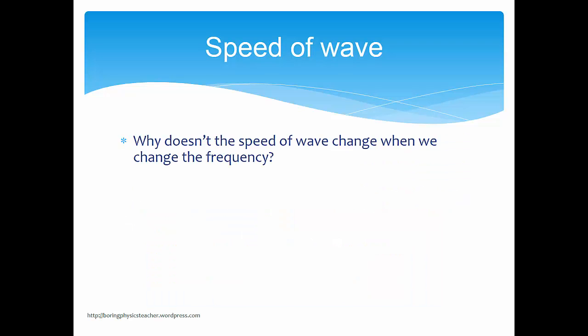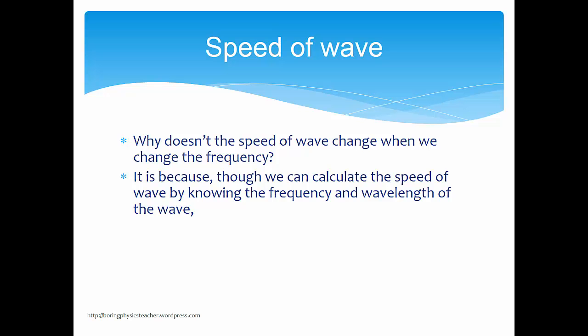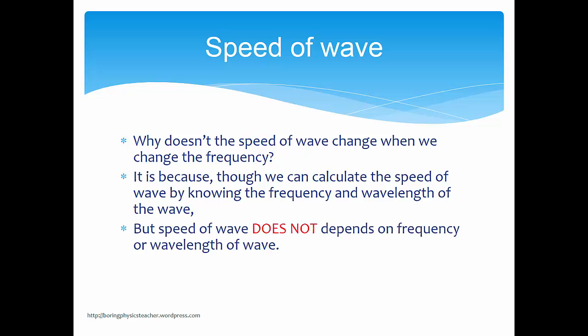But of course, this doesn't address the question: why doesn't the speed of the wave actually change when we change the frequency? It is because though we can calculate the speed of a wave by knowing the frequency and the wavelength, the speed of the wave actually does not depend on frequency or wavelength. You might find it confusing — isn't velocity equals frequency times wavelength? So why wouldn't speed of the wave depend on frequency or wavelength?